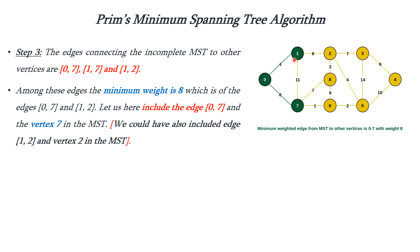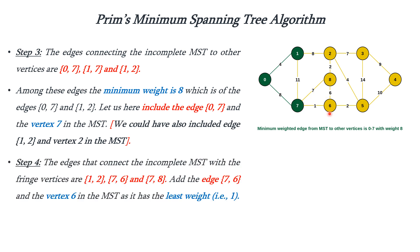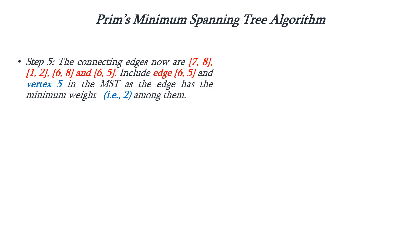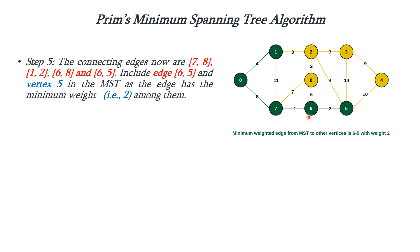Next we have to check for vertices 1 and 7. For 1, the possible vertices which can be connected are 2 and 7, but 7 is not considered because it will form a cycle. For 7 we can either consider 8 or 6. Among these possibilities, 7 to 6 has the least weight which is 1, so we are adding it into the MST. Next, considering 1, 7, and 6: 6 to 5 is the least weight, so we are adding it into the MST.